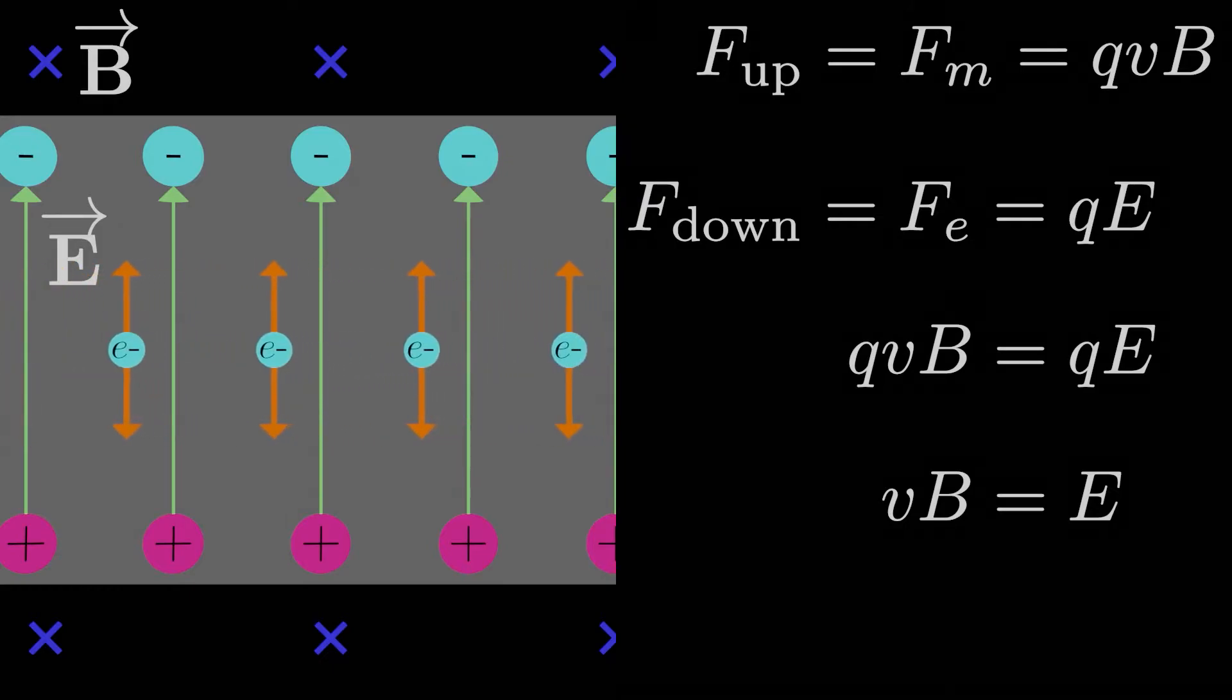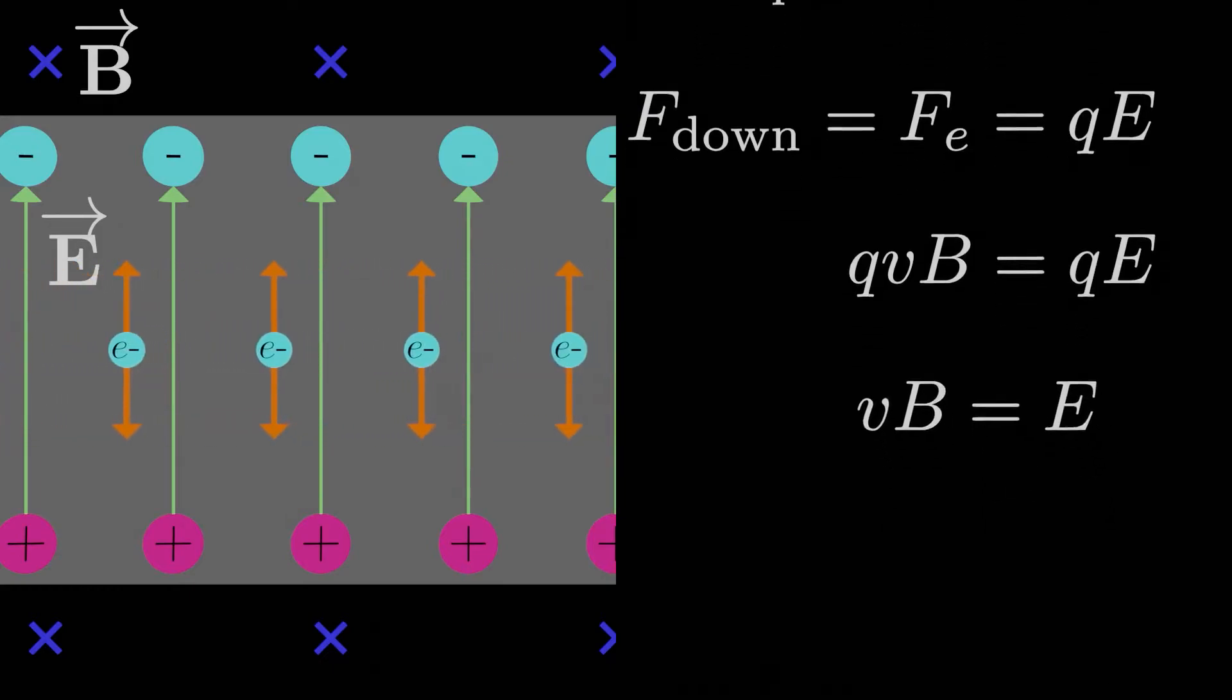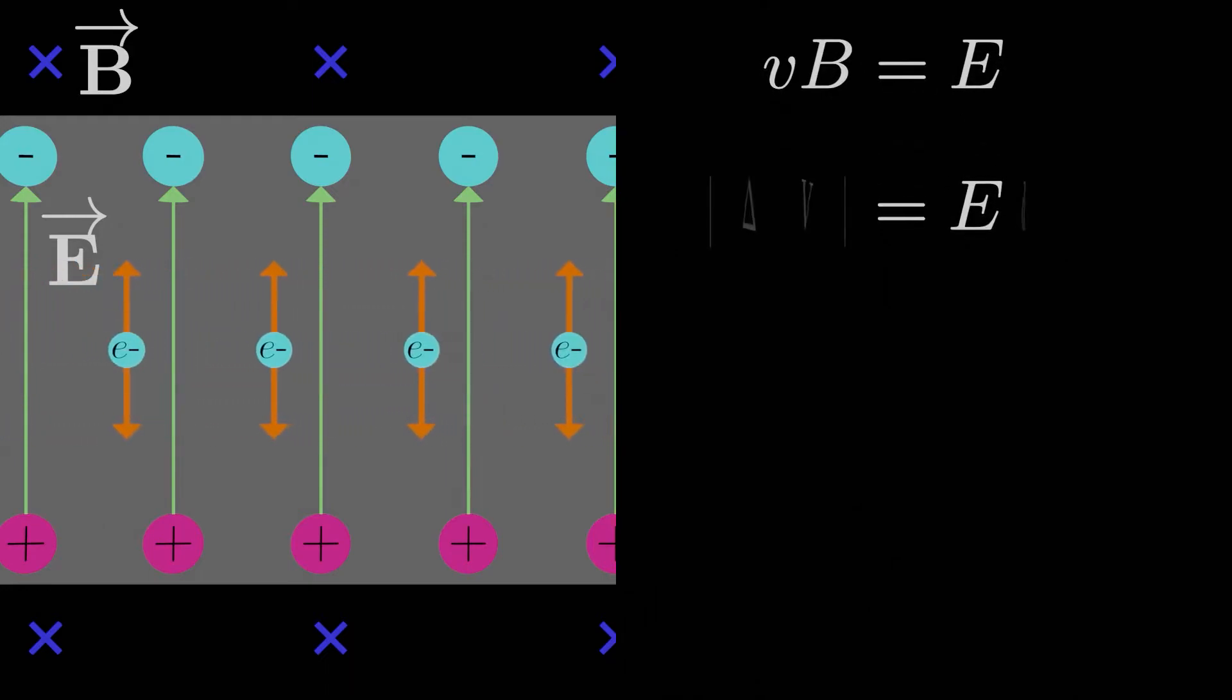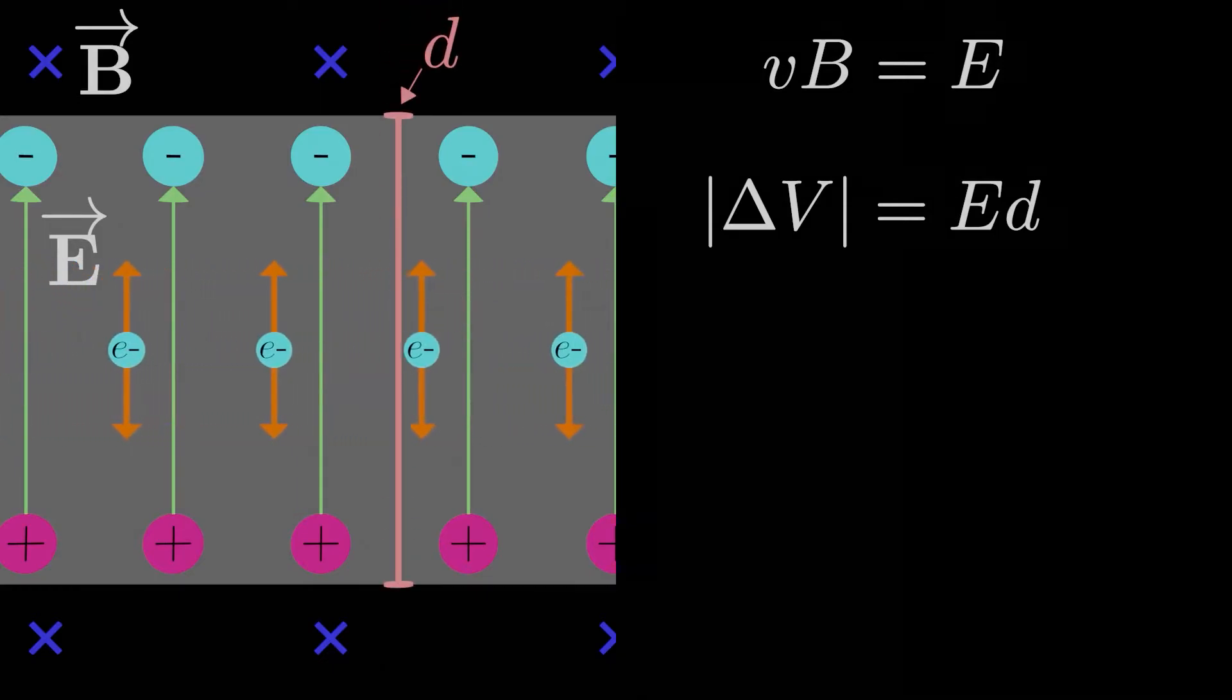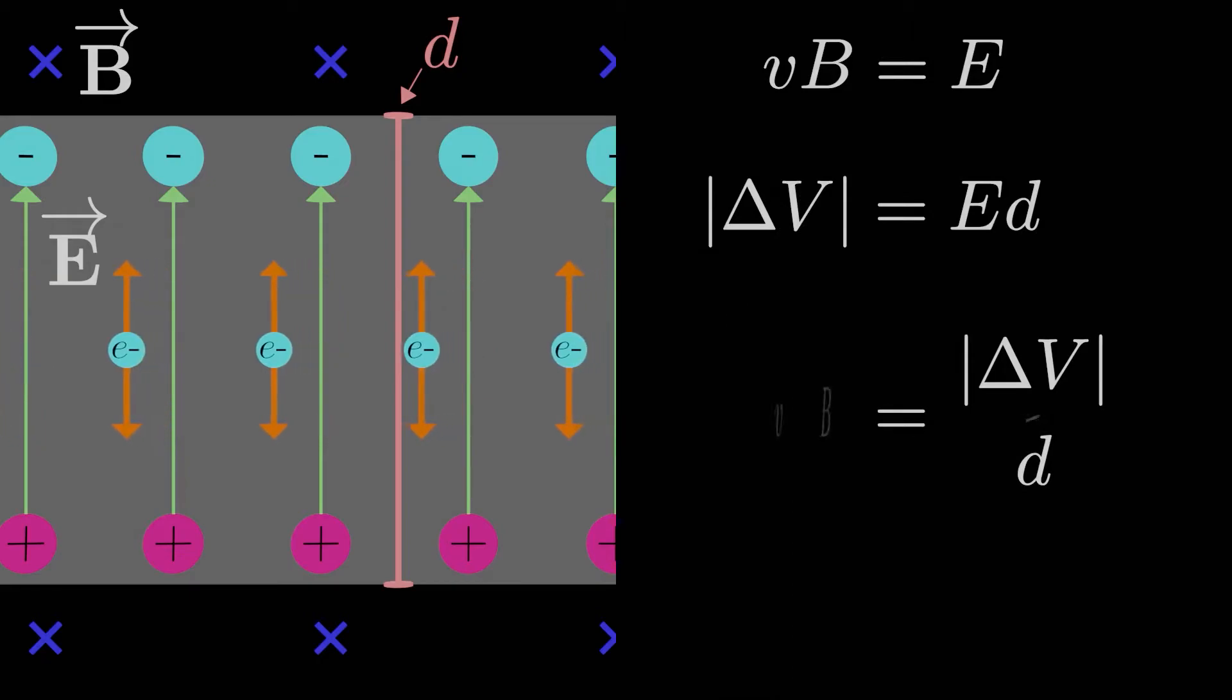From here we know, if we have a perfectly uniform electric field, we can write the magnitude of the potential difference between the top and bottom of the slab as just the magnitude of the electric field times the height of the slab, which we'll call D. Then the drift velocity of the electrons times the magnetic field strength is equal to the potential difference divided by the distance between the top and bottom of the slab. Solving for the potential difference, we get VbD.